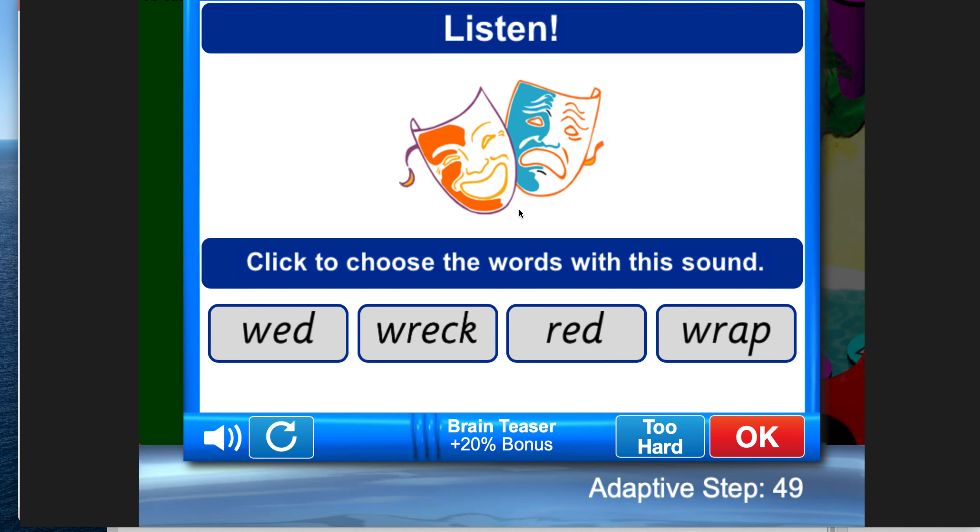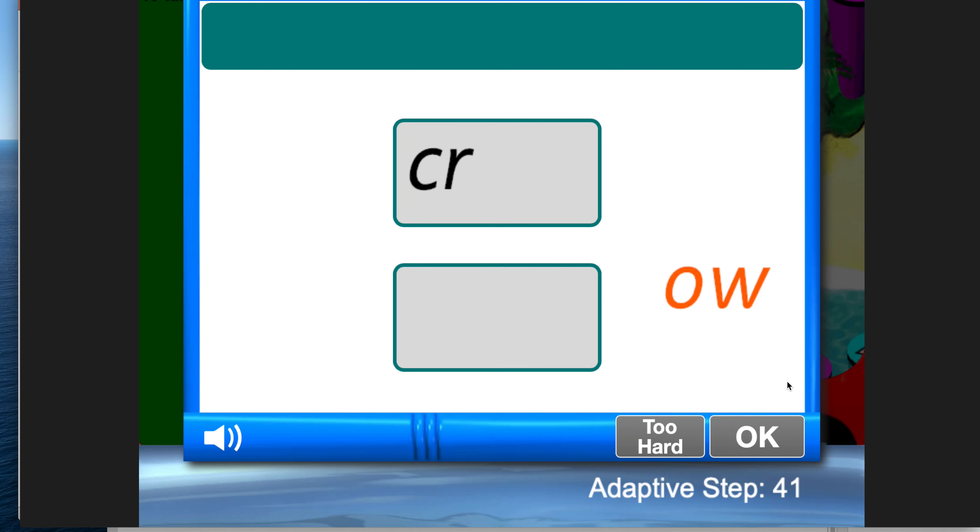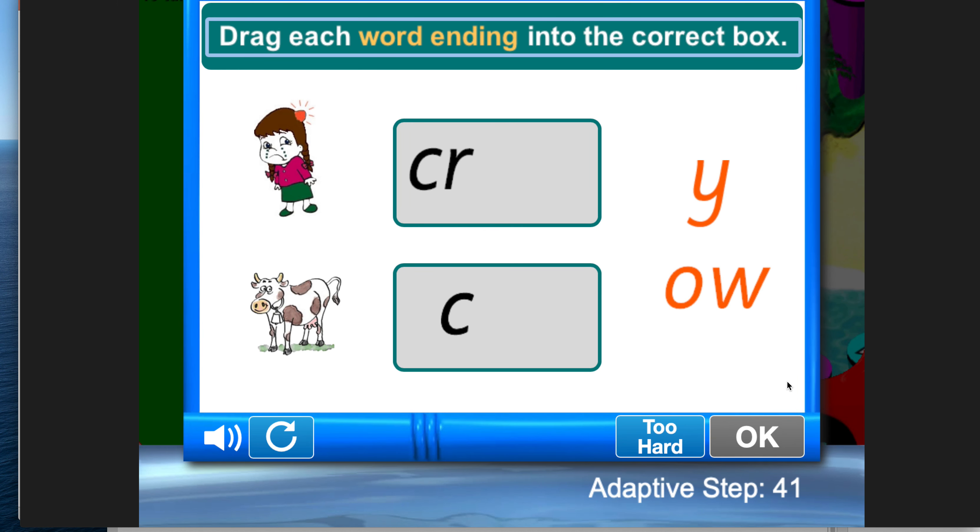walk them through questions like this. If this was too hard, then I would click 'too hard' and it would start to tailor the questions. For example, drag each word ending into the correct box - 'cry,' 'cow' - and then